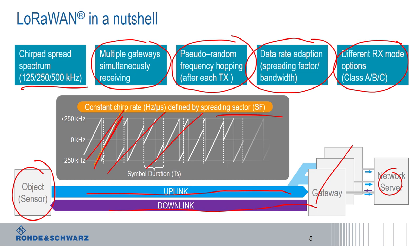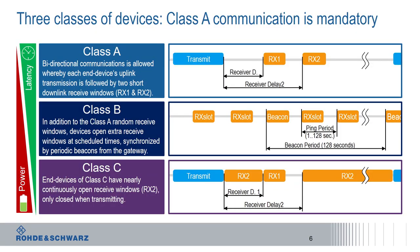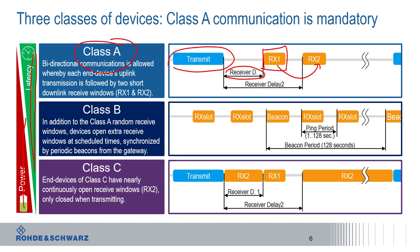The three LoRaWAN classes are important for balancing latency and power consumption. Class A is for sensor networks — the device transmits when an event occurs, then opens two short receive windows and returns to sleep. This gives very low power consumption but the network can only reach the device after an uplink. Class B adds scheduled receive slots using beaconing for time synchronization. Class C devices are almost always listening, giving highest power consumption but lowest latency.